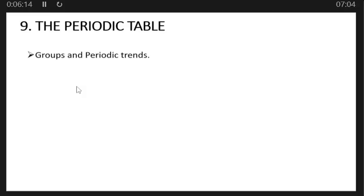Topic nine is the periodic table. Under periodic table, groups and periodic trends. Here you actually concentrate also on the uses of each element of the group, for example group one, group seven, and group eight.